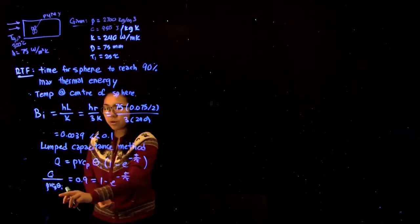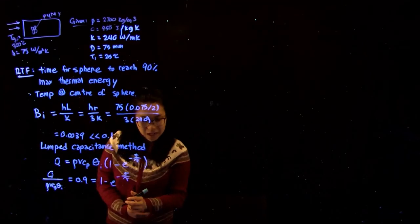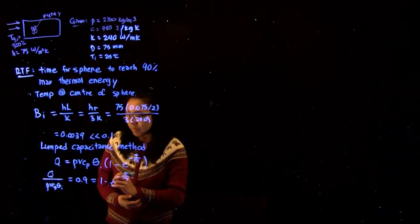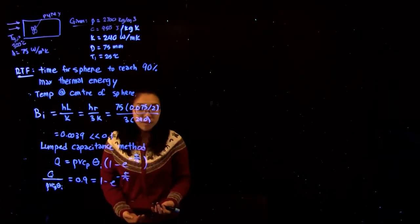So that's how we set up this equation. Now we have Q over rho V Cp theta_i equals 0.9, so the next thing we want to do is find tau.